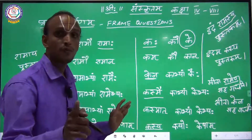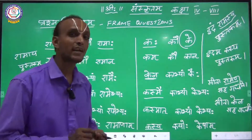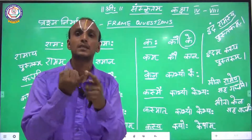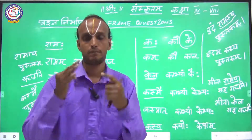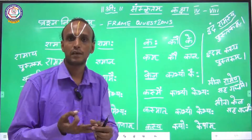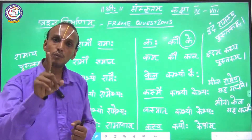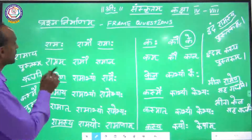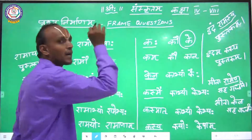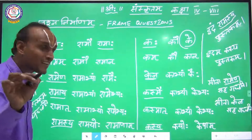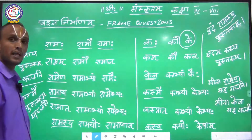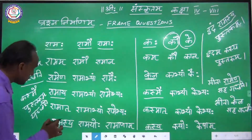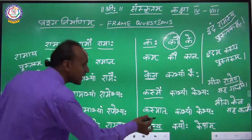So you have to remember one thing: if you want to frame a question in Sanskrit, you have to identify four things — Lingam, Vachanam, Vibhakti — and then take the same Lingam, same Vachanam, same Vibhakti from the Kim Shabda. For example: if the underlined word is Ramaha, take Kaha; if it is Ramau, take Kau; if it is Ramath, take Kasmath.